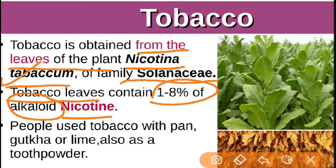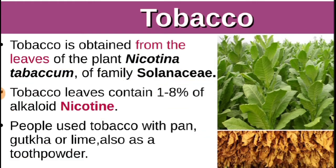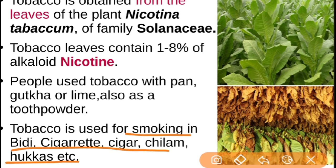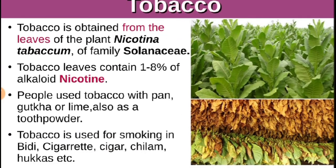People use tobacco with paan, gutka, lime, or even as a tooth powder. Tobacco is also used in smoking — in bidi, cigarette, cigar, chilam, and hookah. All these products are basically based on tobacco.